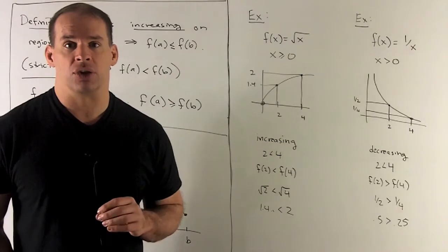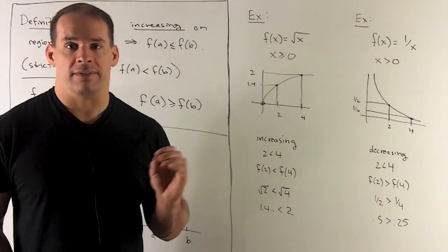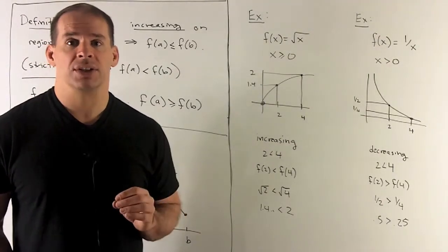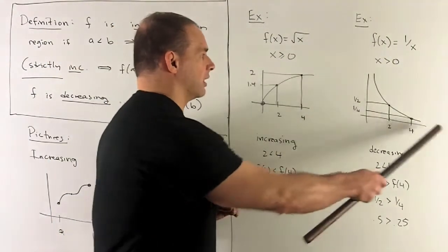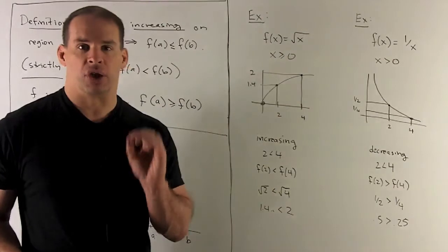For an example strictly decreasing, let's use f of x equal to 1 over x on x bigger than 0. Our graph looks like this. That's strictly decreasing.